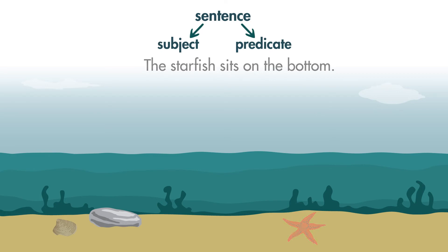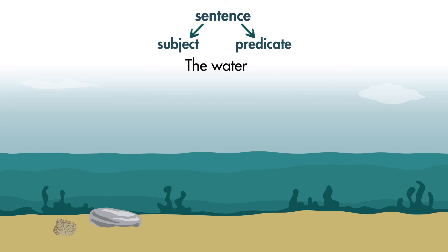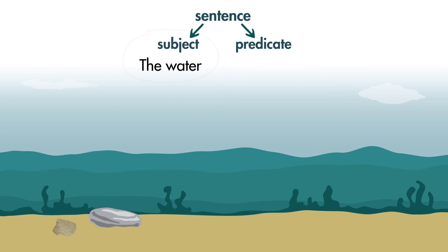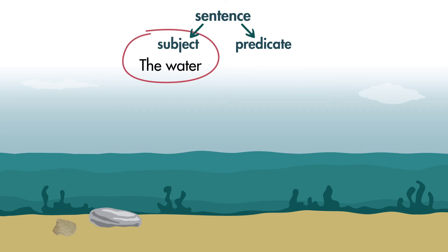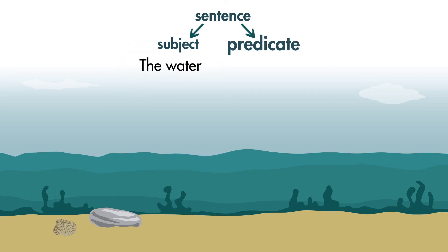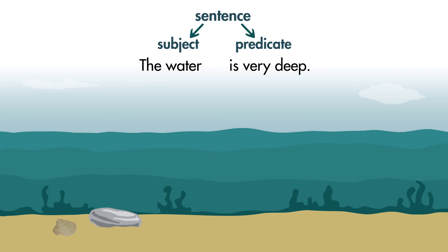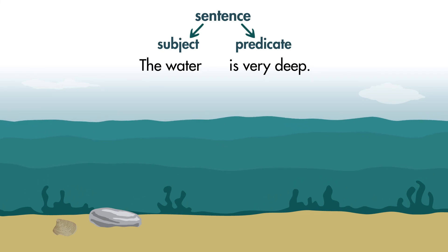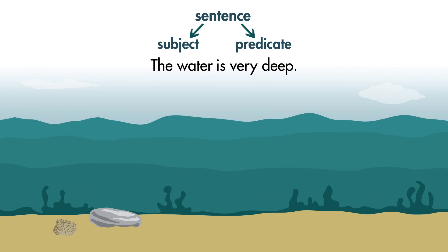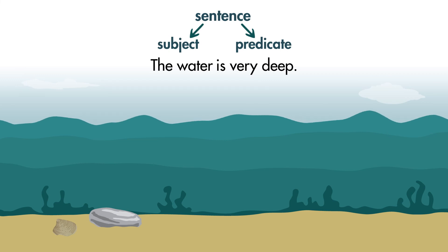Try another one. Look at this sentence fragment: The water. What is missing? We know who or what the sentence is about — the water. The water is the subject, but we are missing the predicate. We can add a predicate: is very deep. Now we have a complete sentence: The water is very deep.